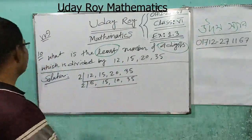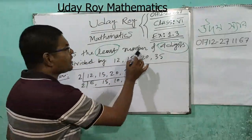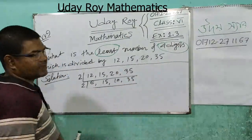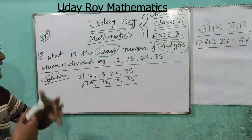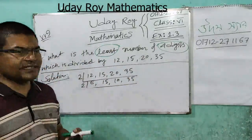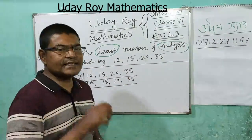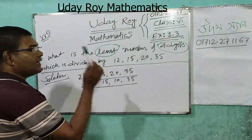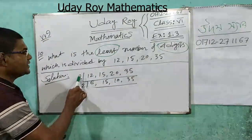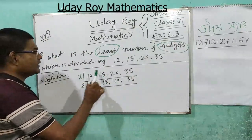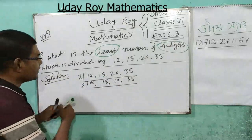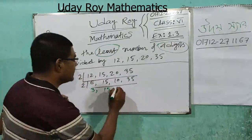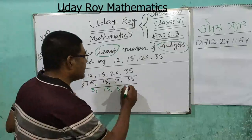Follow number 10: What is the least number of 4 digits which is divisible by 12, 15, 20, and 35? Since it says 'least' or 'smallest', we have to find out the LCM first. Be careful. LCM of 12, 15, 20, 35 — dividing by 2: we get 6, 15, 10, 35.